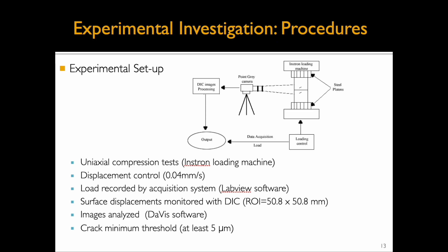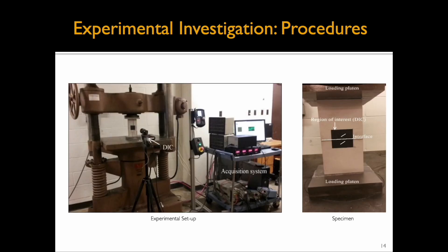For the experimental setup, uniaxial compression tests were run with a displacement control rate of 0.04 mm per second. The load applied to the specimen was recorded using a data acquisition system. Surface displacements were monitored with a digital image correlation (DIC) system, and a crack on the surface was deemed present when the DIC displacement jump was at least 5 micrometers. The region of interest around the flaws had a random speckle pattern so that surface displacements could be monitored using the DIC system.